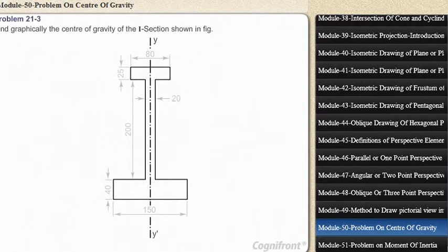As the section is symmetrical about its vertical axis YY', the center of gravity must lie on that axis. Draw the given section to a convenient scale.